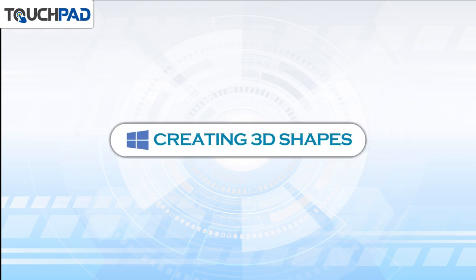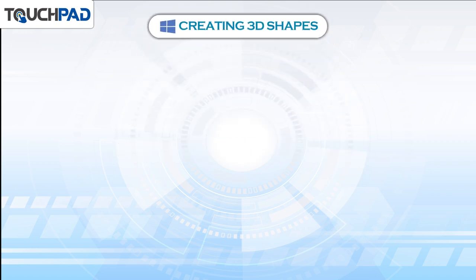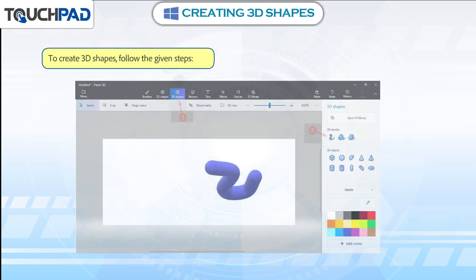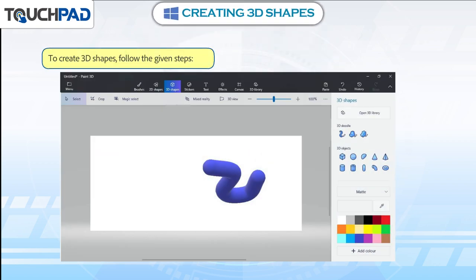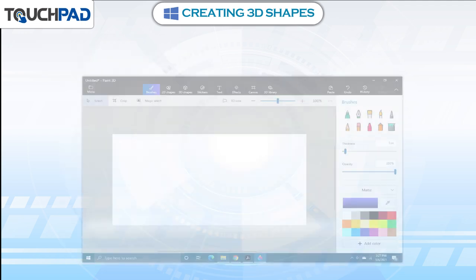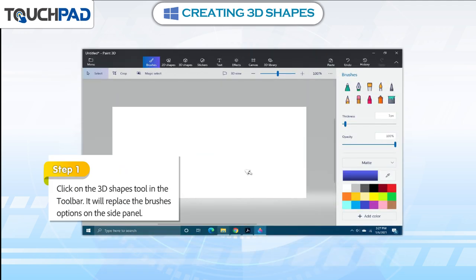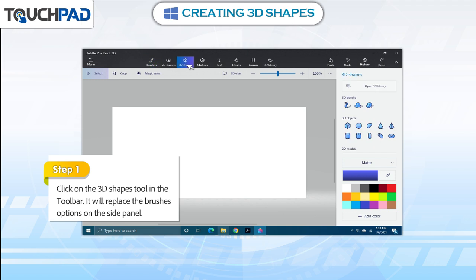To create 3D shapes, follow the given steps. Step 1: Click on the 3D Shapes tool in the toolbar. It will replace the brushes options on the side panel.